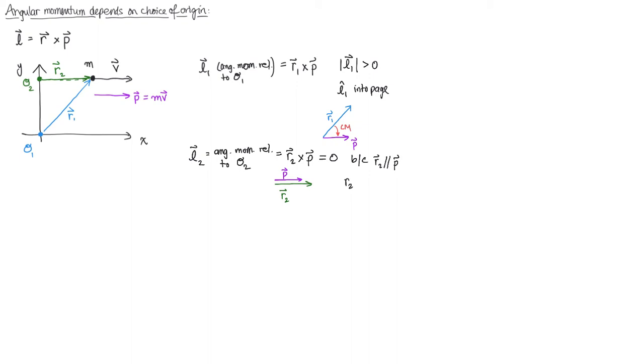That tells us immediately that the angular momentum is zero, because r2 is parallel to p. The cross product of r2 and p is zero. Recall the magnitude of the cross product is proportional to the sine of the angle between those two vectors. Sine of zero is zero, so this cross product gives us zero.